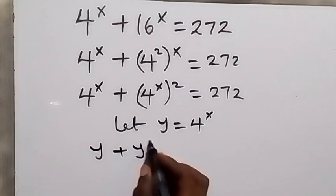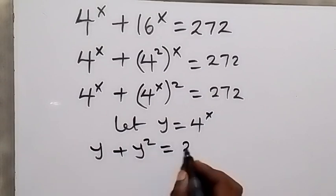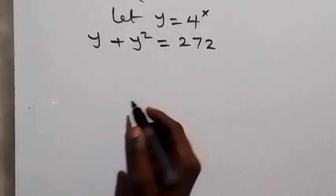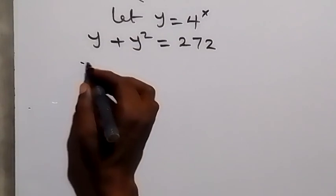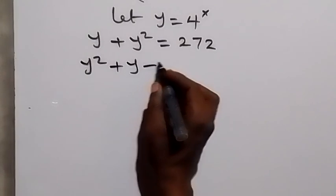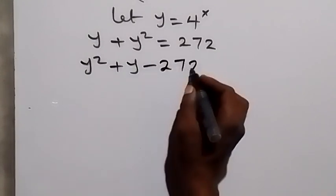plus y square equals 272. Then we can rearrange this to form a quadratic equation, and this will become y square plus y, then take this one here, we have minus 272, which is equals to zero.